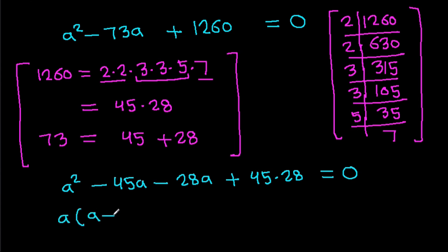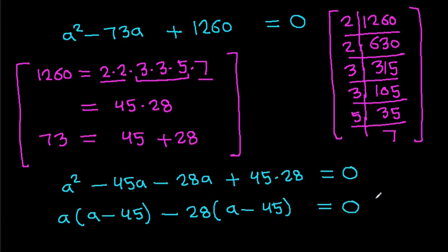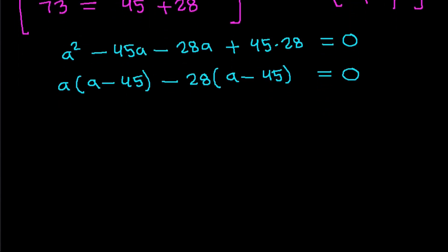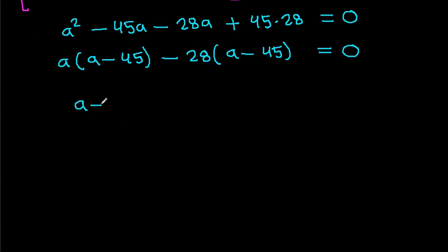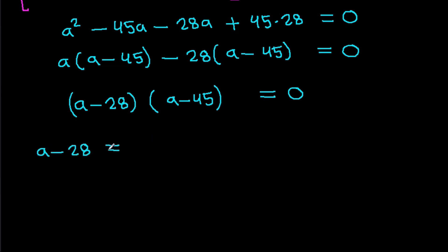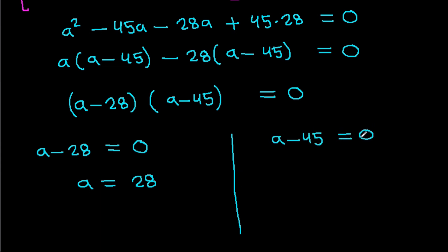Now, factoring 1260: 1260 equals 2 times 2 times 3 times 3 times 5 times 7, which gives us 45 times 28. And 45 plus 28 equals 73. So the equation factors as A squared minus 73A plus 1260 equals (A minus 45)(A minus 28) equals 0. Therefore either A minus 28 equals 0, giving A equals 28, or A minus 45 equals 0, giving A equals 45.